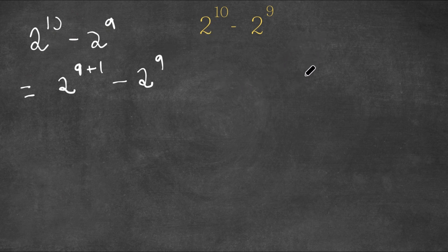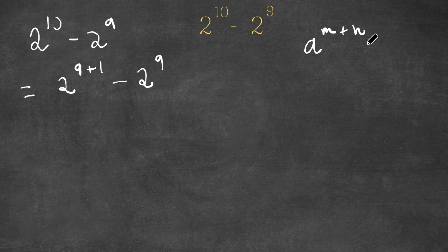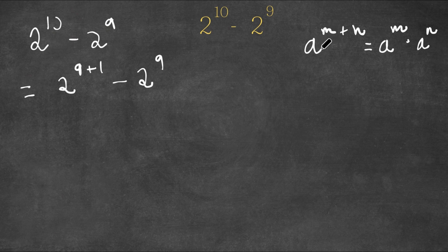Now an important property of exponents is that if we have something in the form a to the power of m plus n, this is equal to a to the power of m times a to the power of n. So the base simply distributes with the exponents.